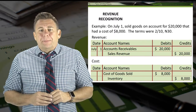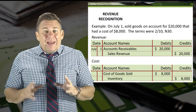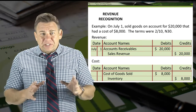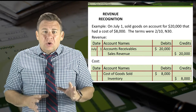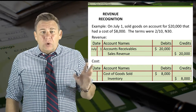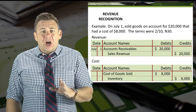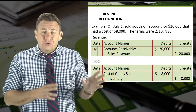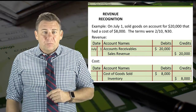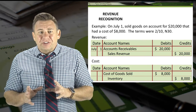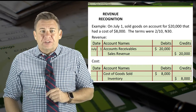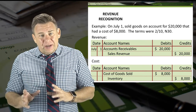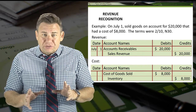Let's look at an example with a sales discount and how that impacts our journal entries. On July 1, we sold goods on account for $20,000 that had a cost of $8,000. The terms were 2/10 net 30. So we would debit accounts receivable and credit sales revenue for $20,000. We would also debit cost of goods sold and credit inventory for $8,000.